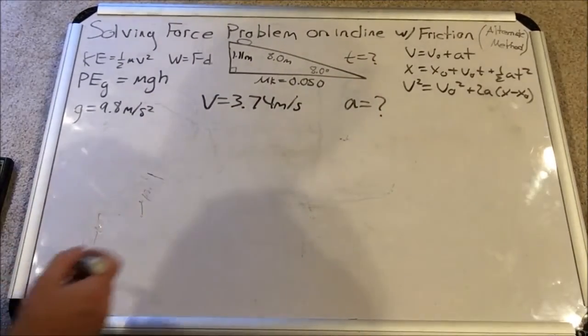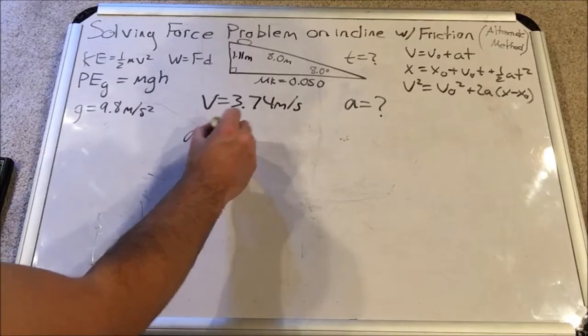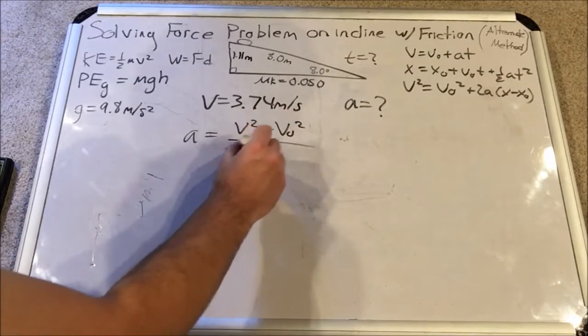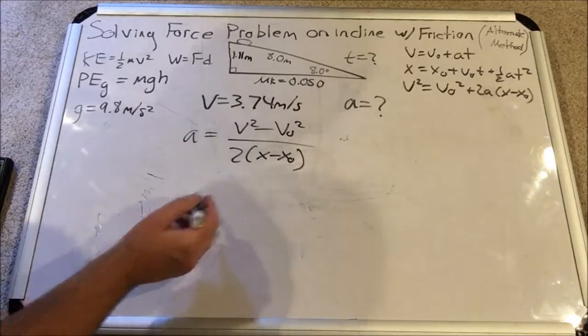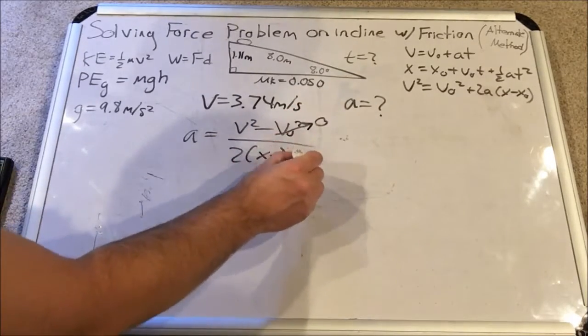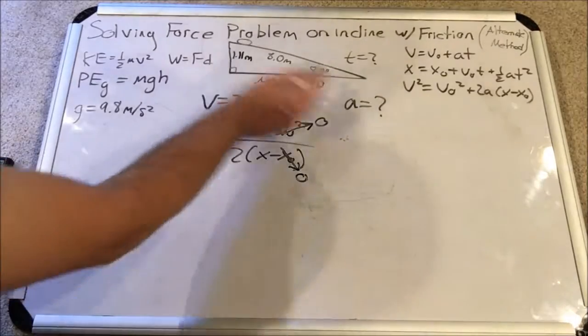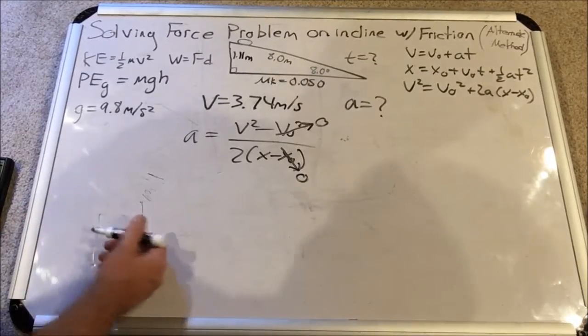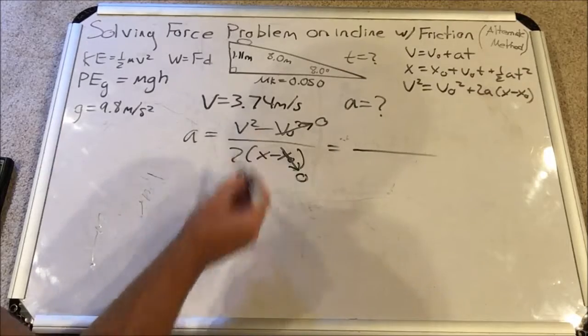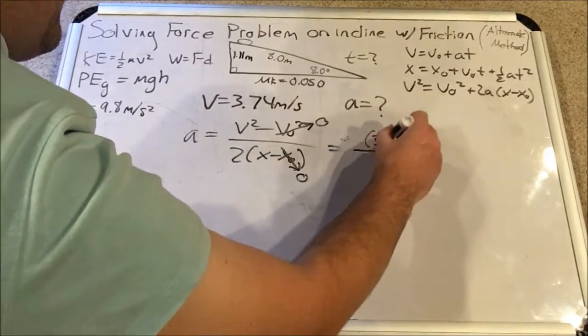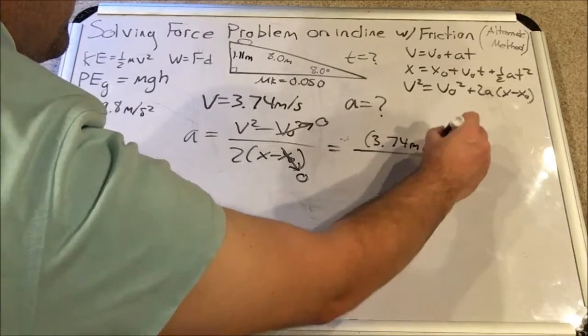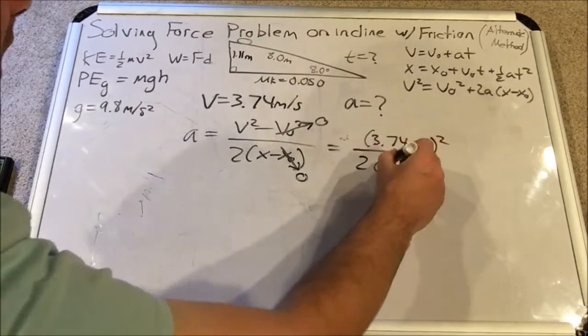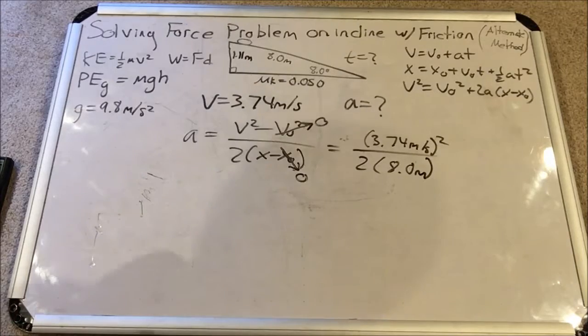So if we take this and we solve for a, we will get the following. We'll get that a equals v squared minus v naught squared over 2 times x minus x naught. Okay, two of these things are zero. The initial velocity is zero, and the initial position we can always take to be zero when we know the total displacement. We could just set this difference equal to the displacement. So let's plug this stuff in. The final things we have are v squared, which is 3.74 meters per second. Square that, don't forget to square it, and we divide two times the final displacement, eight meters.